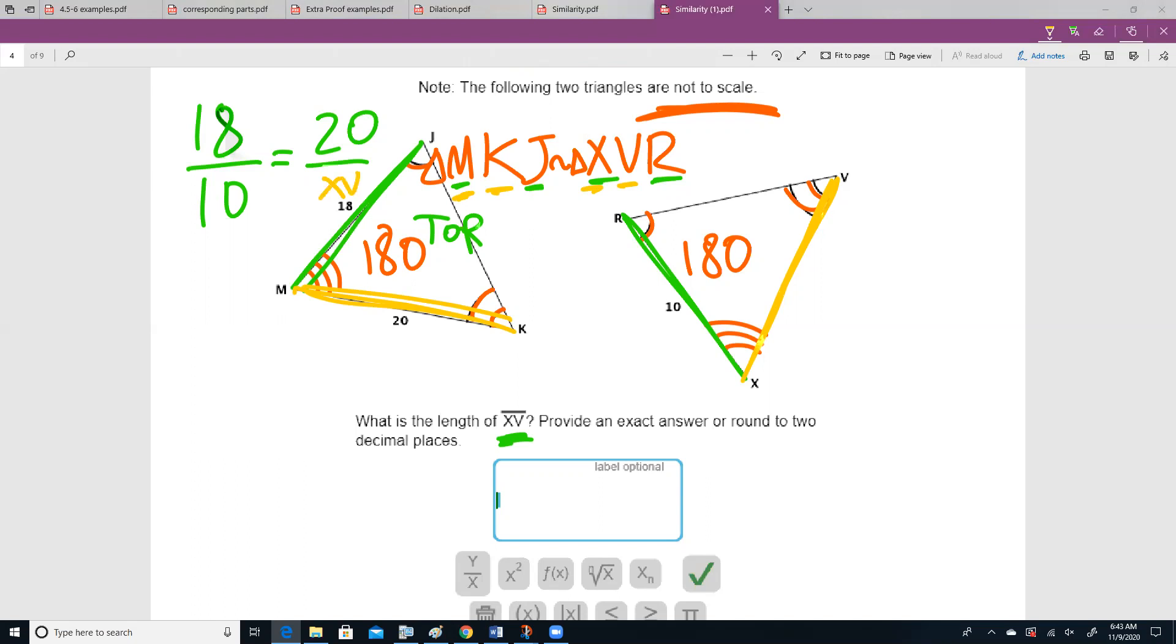Looks like we need to do some more cross multiplication. 18 times xv equals 200. Divide both sides by 18. And what is xv equal to? We could leave it as a fraction, but this says round two decimal places.